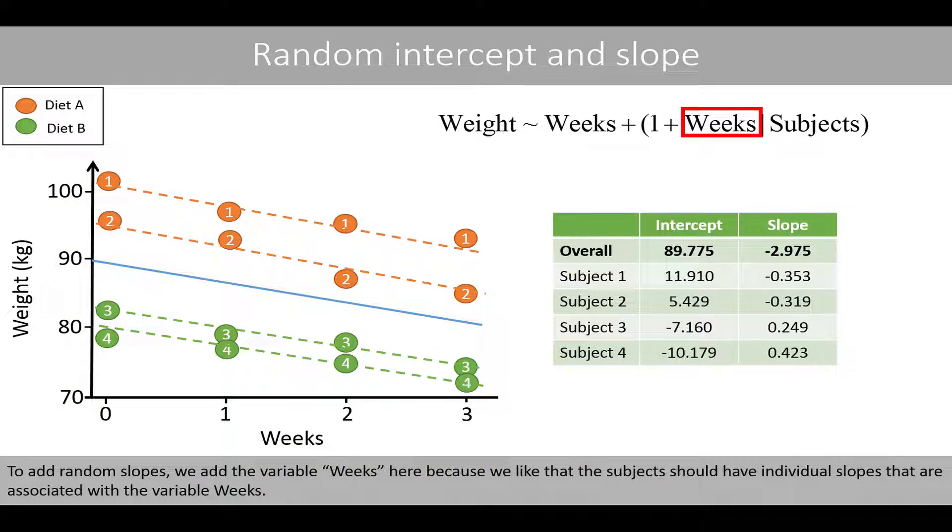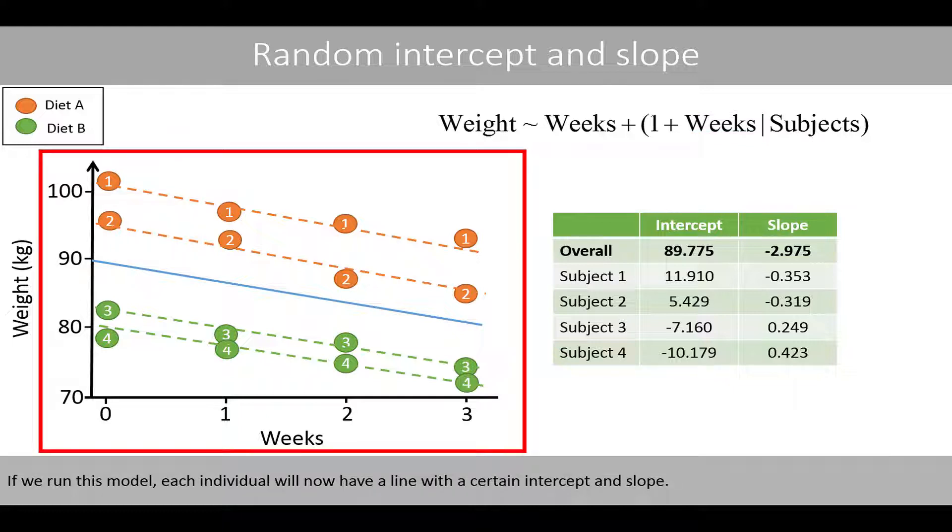To add random slopes, we add the variable weeks here, because we like that the subjects should have individual slopes that are associated with the variable weeks. If we run this model, each individual will now have a line with a certain intercept and a slope.